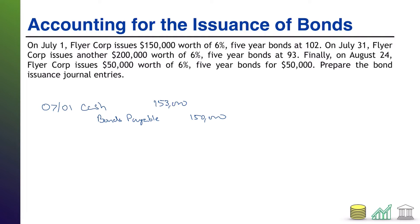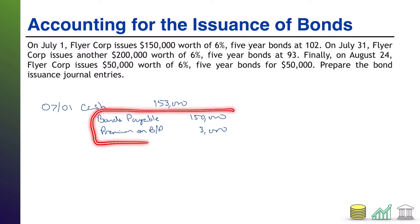Now of course our journal entry is not balanced, so we're going to have to do something with that $3,000 difference. That $3,000 extra cash the company receives is what is known as a premium on bond payable. You received extra and record it as a credit to premium on bond payable, because it increases the carrying value of your bond — it goes on the same side of the journal entry as your bond.